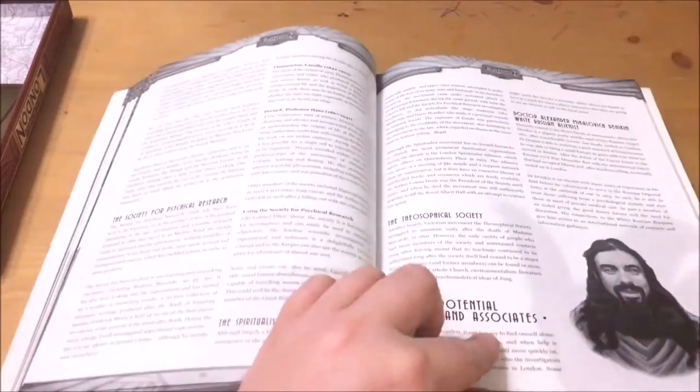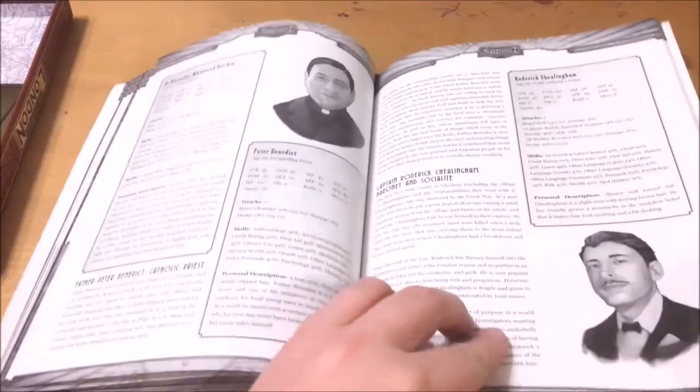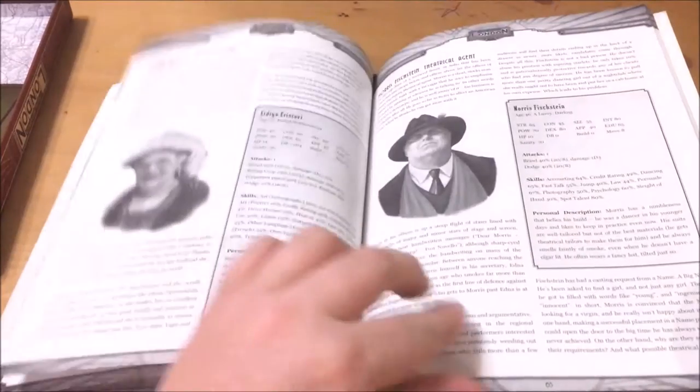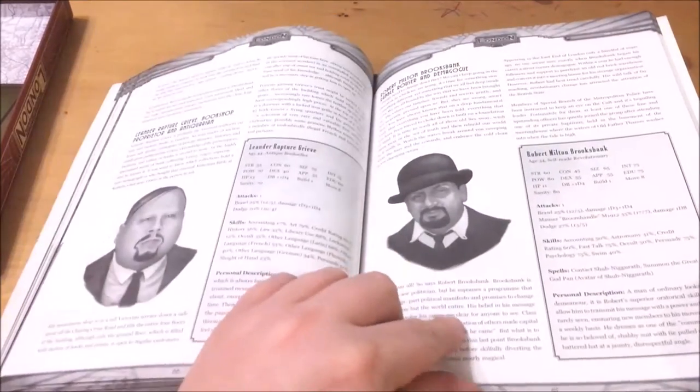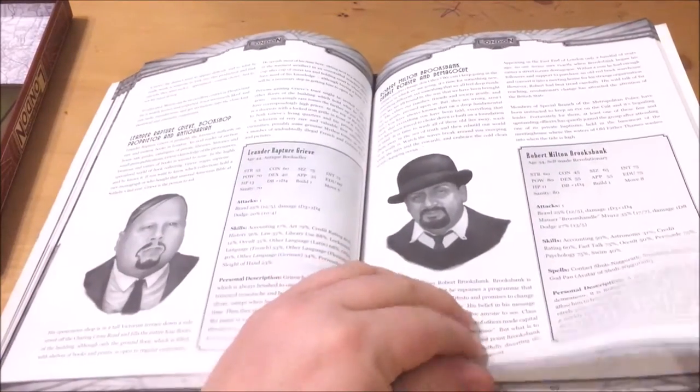We then have a list of potential allies and associates. These are a list of interesting NPC characters who could help or hinder investigators. These are excellently illustrated, described and statted out.